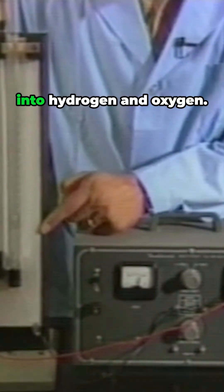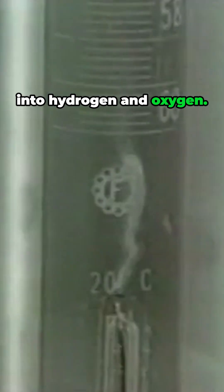Electrons from a DC power source can decompose water into hydrogen and oxygen. This is called electrolysis.